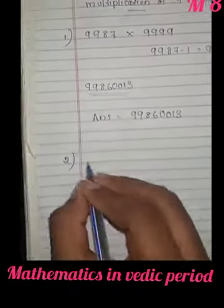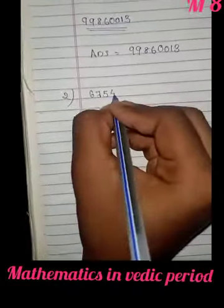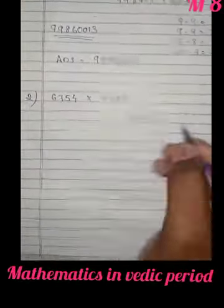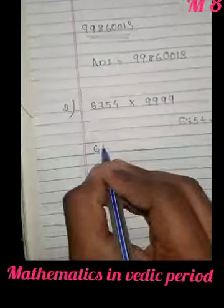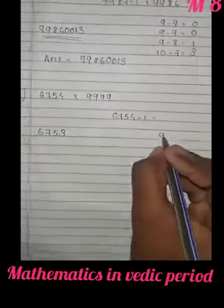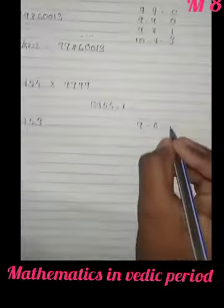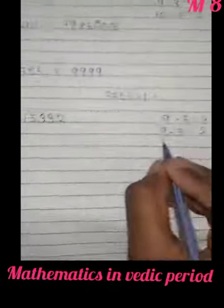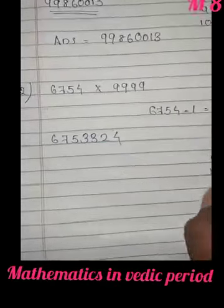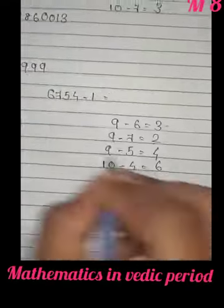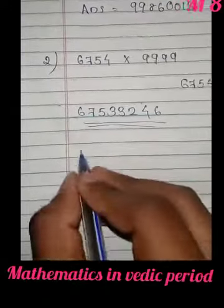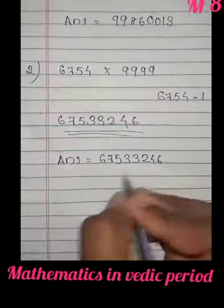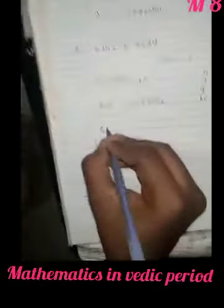6754 into 9999. You can easily write the answer, no need of steps. 6753, then 9 minus 6 is 3, 9 minus 7 is 2, 9 minus 5 is 4, lastly 10 minus 4 is 6. The answer becomes 67533246. Easily we can write. Next question.